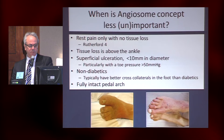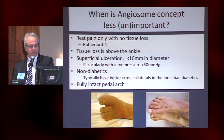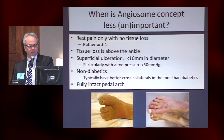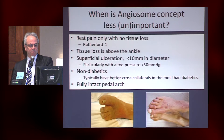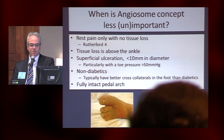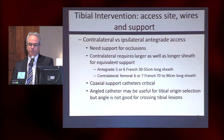Superficial small lesions when you actually do have adequate toe pressure are things we shouldn't worry so much about with angiosomes. Diabetics are a problem — non-diabetics generally have better cross-collaterals and a patent pedal arch. So in diabetics the angiosome may be important, but again, with an intact pedal arch, often that flow is adequate.